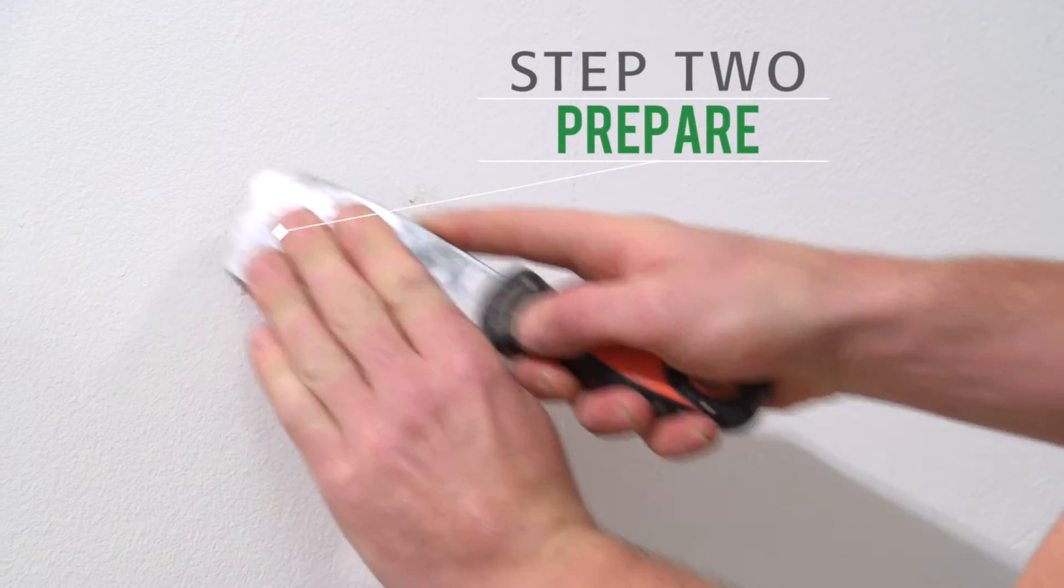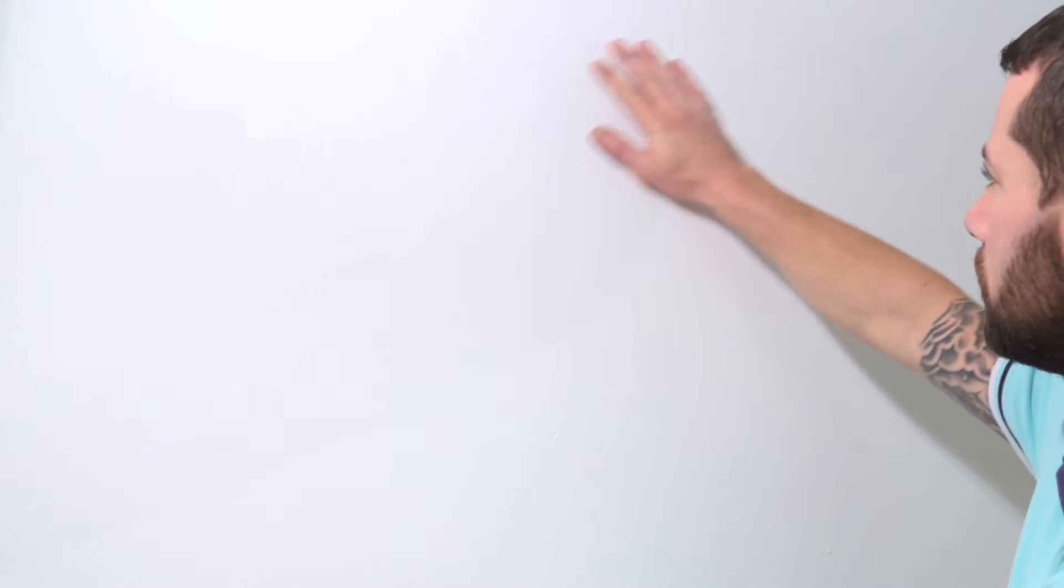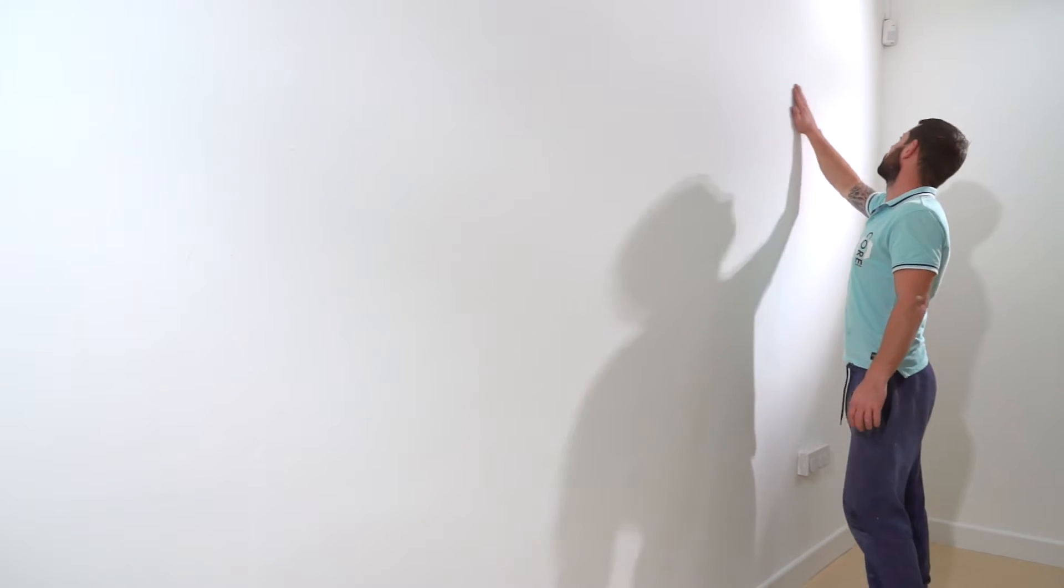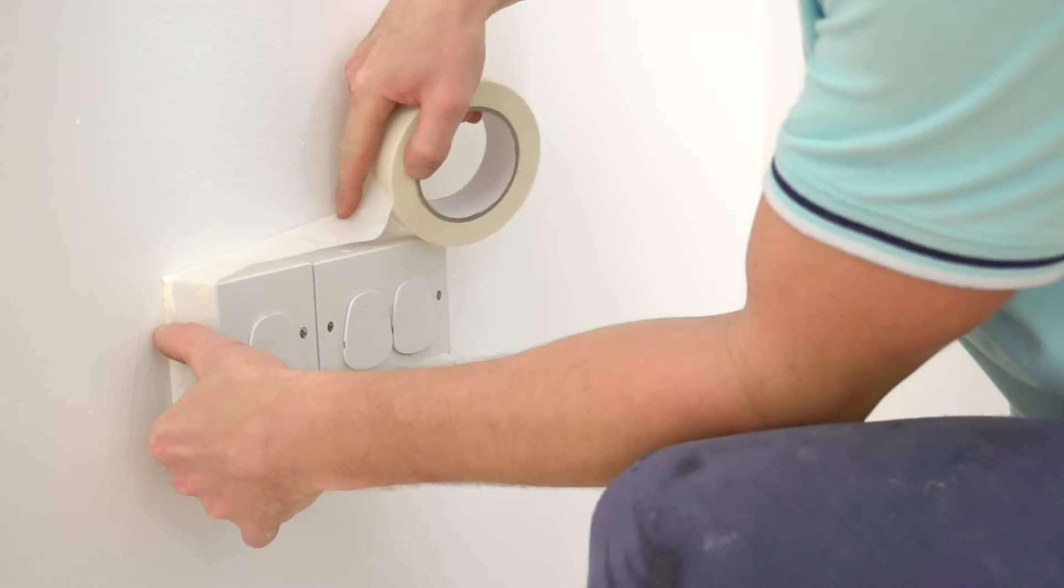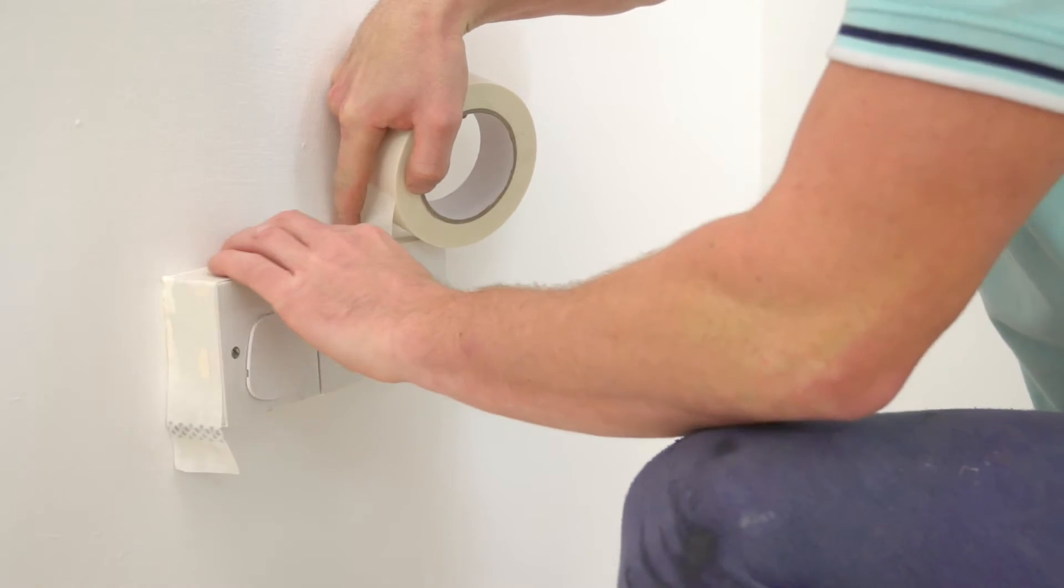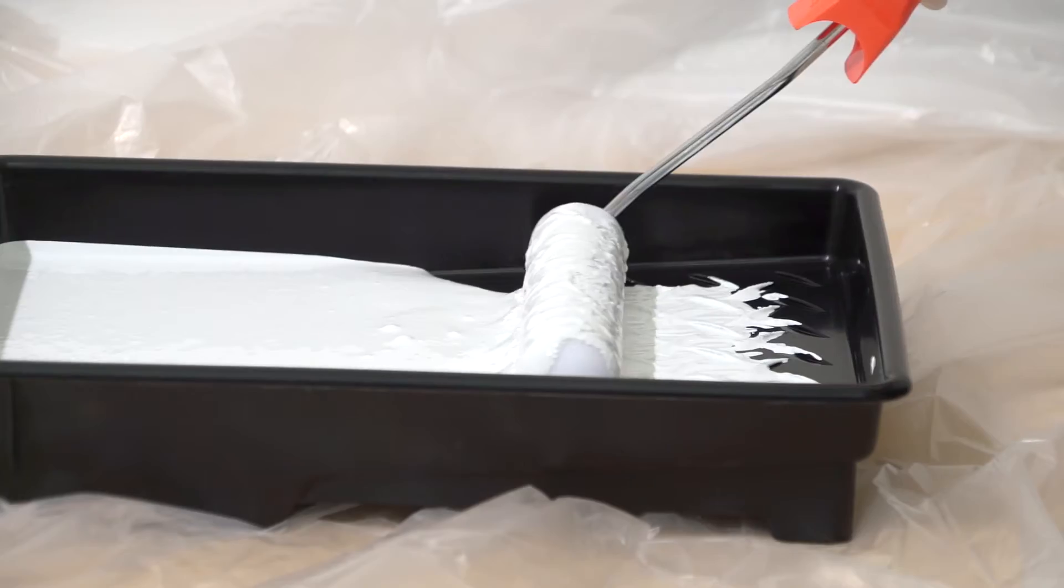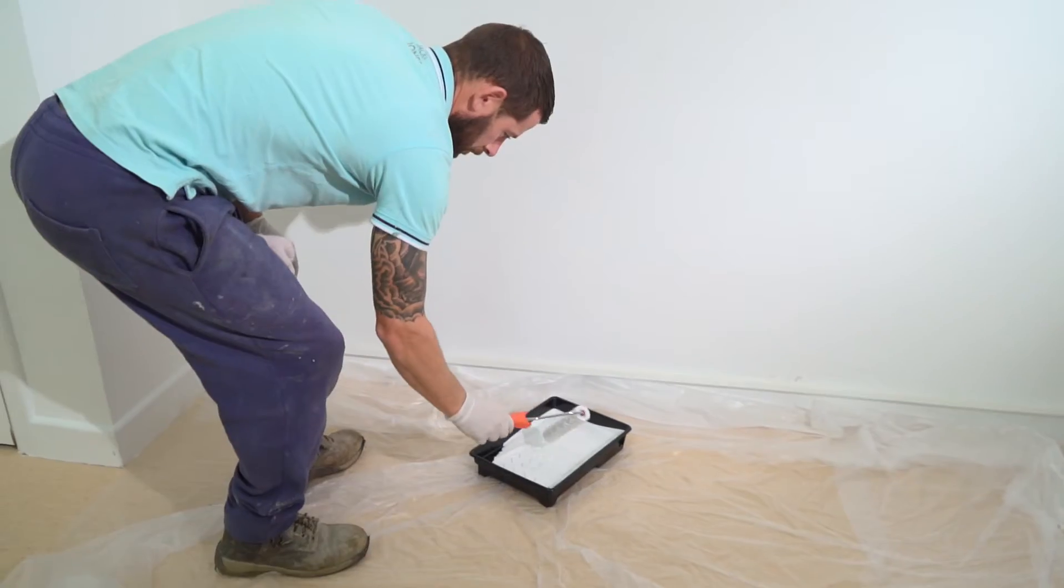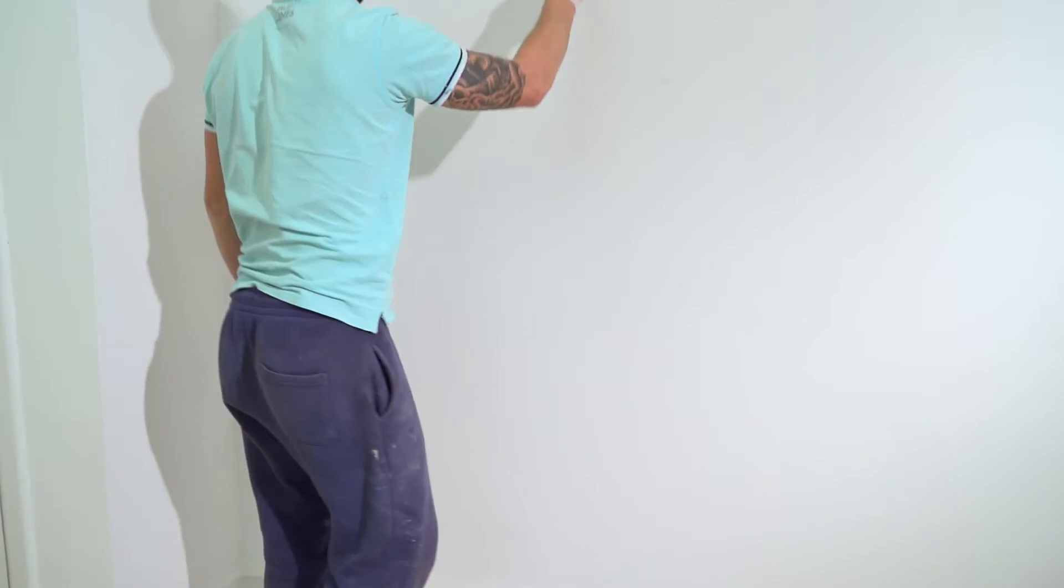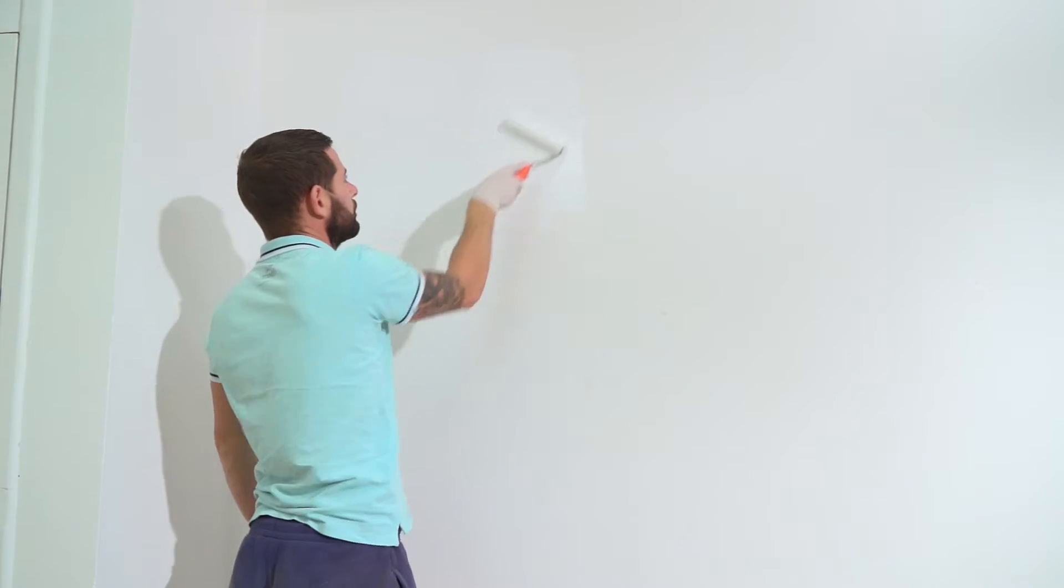Step 2: Prepare. Inspect your surface, making sure that it is clean, dry, and capable of supporting the magnetic plaster. Cover any edges, light switches, or fittings with masking tape. Apply a coat of smart white primer to seal the surface. Ensure the primer is dry before applying smart magnetic plaster.